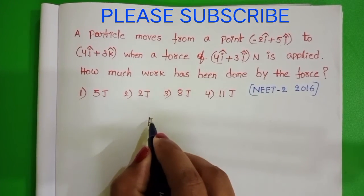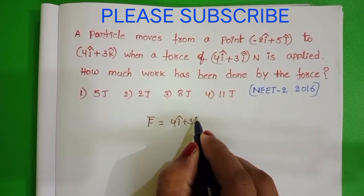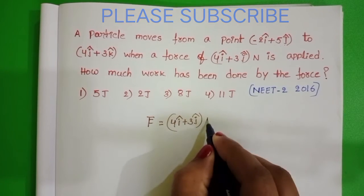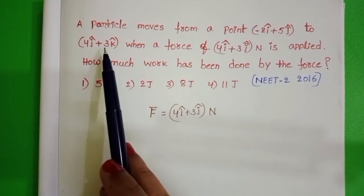Given force F⃗ = 4î + 3ĵ newton. And it displaces from this position to this position.